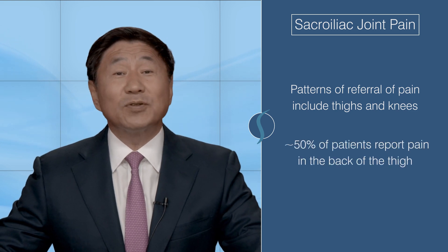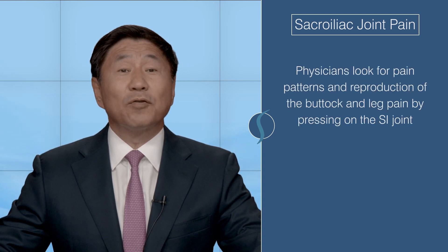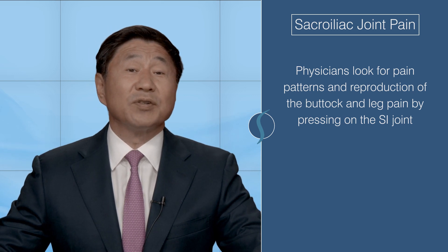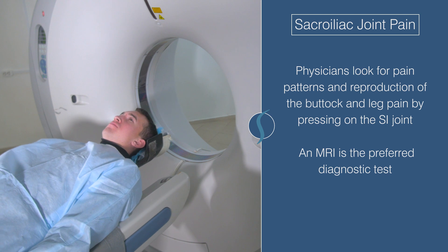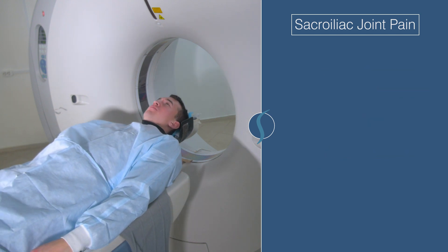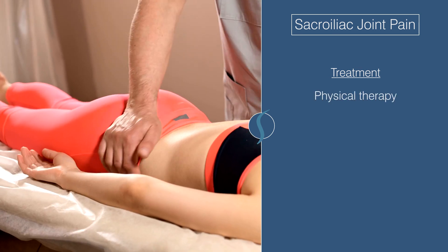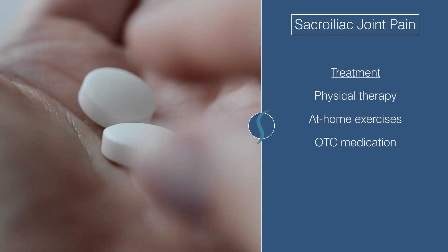Around 50% of these patients report pain in the back of their thighs. Although there's a lack of clearly defined guidelines when it comes to diagnosing SI joint pain, physicians look for pain patterns and reproduction of the buttock and leg pain by pressing on the joint. An MRI is the preferred diagnostic test for evaluating the problem. Conservative treatment for SI joint pain includes physical therapy, at-home exercises, and over-the-counter medications.